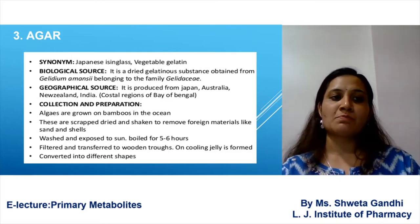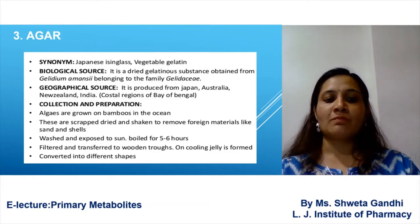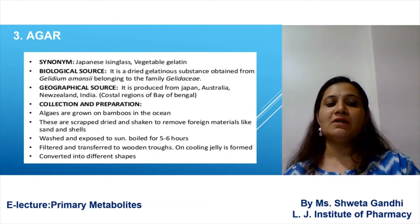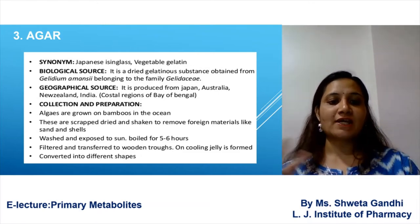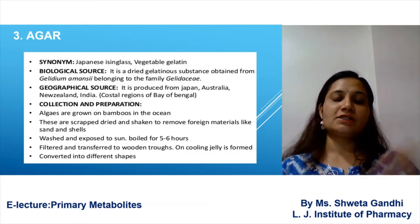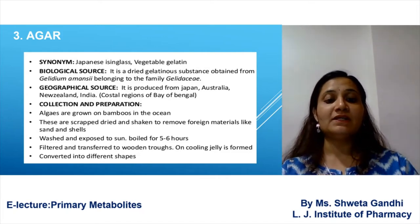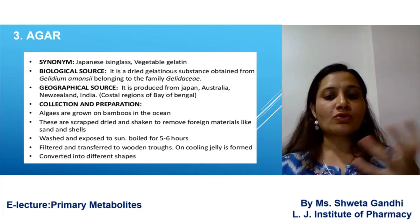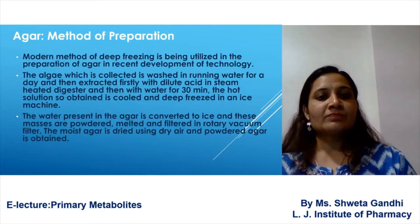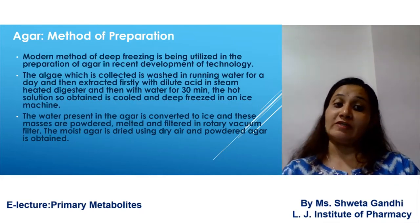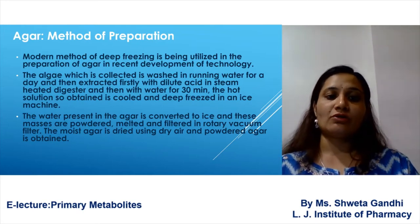Collection is very important for agar. The algae are grown on bamboos and scraped; foreign particles are removed, then washed and exposed to sun. It is then boiled for five to six hours, filtered, and spread in wooden troughs. On cooling, a gel is formed in different shapes. Nowadays, deep freezing is also used as a technology for the preparation of agar.